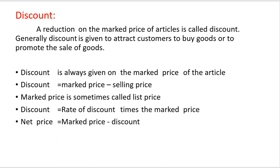Discount is always given on the market price of articles. Discount equals market price minus selling price. Market price is sometimes called list price. Discount also equals rate of discount times market price. Net price equals market price minus discount.